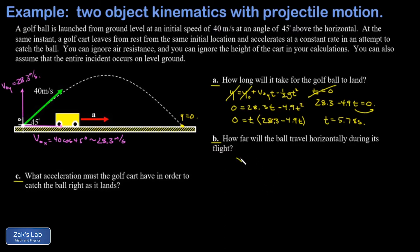In part B I'm asked how far does the ball travel horizontally during its flight, and so I look at the horizontal position as a function of time for the projectile. This is really just a constant velocity equation because the x component of the velocity of a projectile never changes. The initial position is zero.